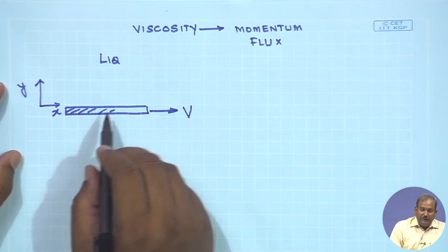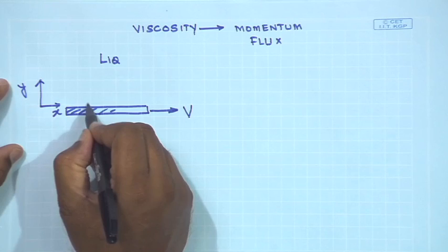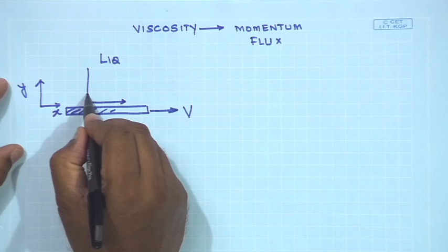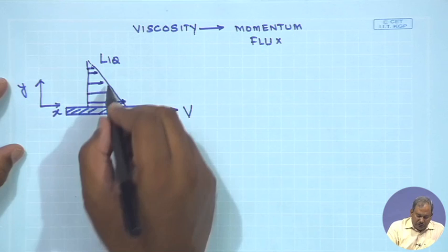As the solid plate starts to move, the liquid layer in contact with it will also start to move. Near the solid plate, the liquid will have a velocity approximately equal to that of the plate, but as we move away from the plate, the effect of the plate is felt less and less. Drawing a rough velocity profile, the velocity progressively decreases, and at a point far from the plate it is roughly zero.